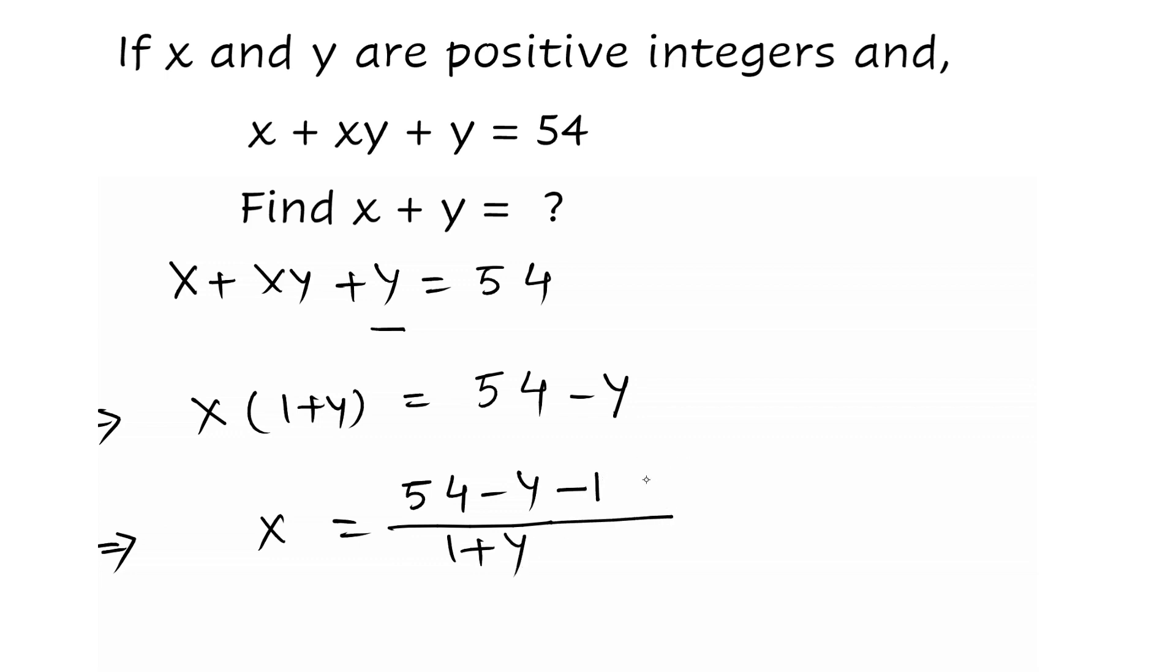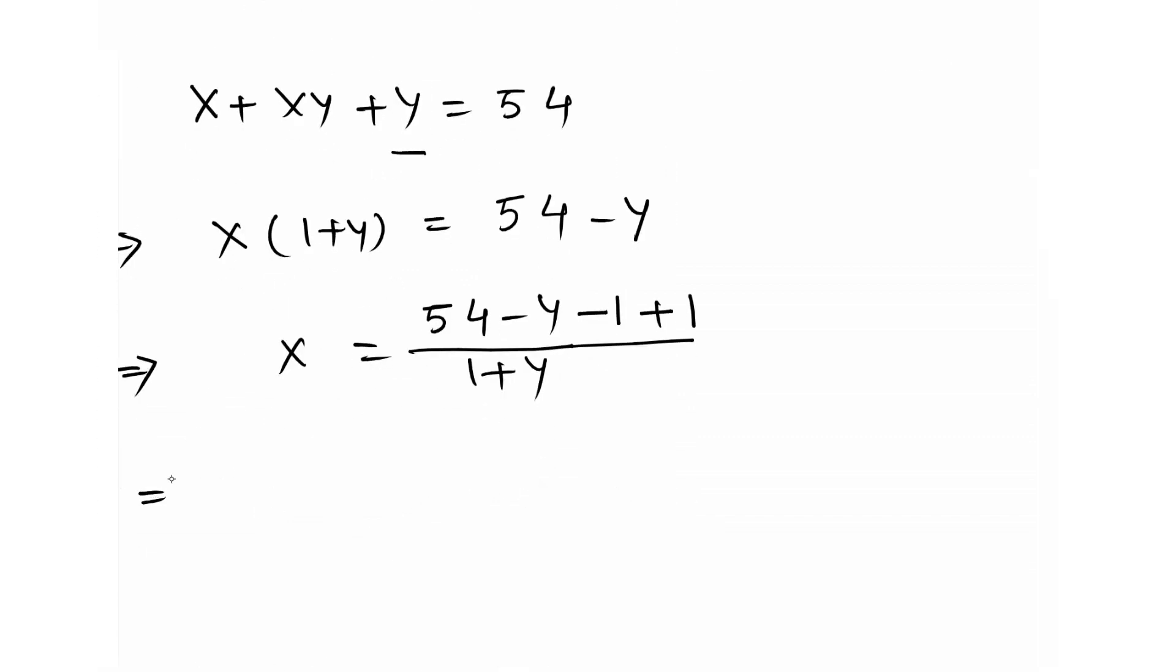Now we subtract 1 from the numerator as well as add 1 to the numerator so that its value is not changed. Now we combine first and the last term, 54 + 1 to give 55.